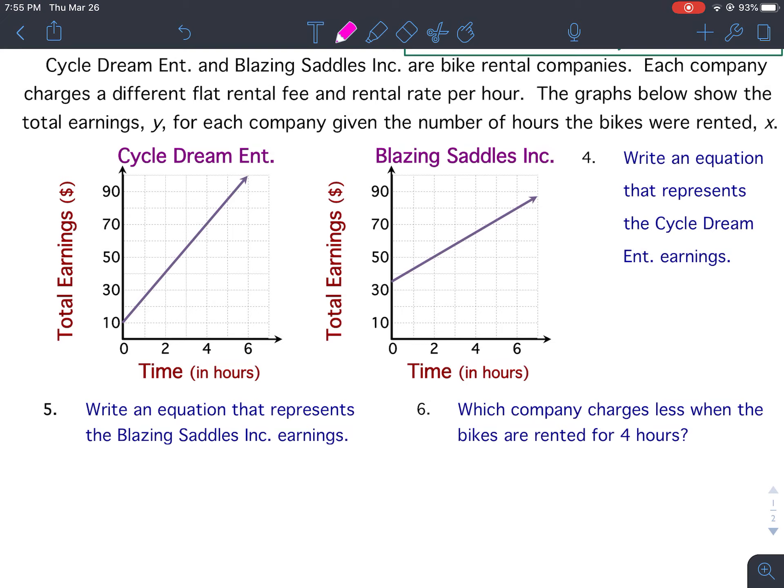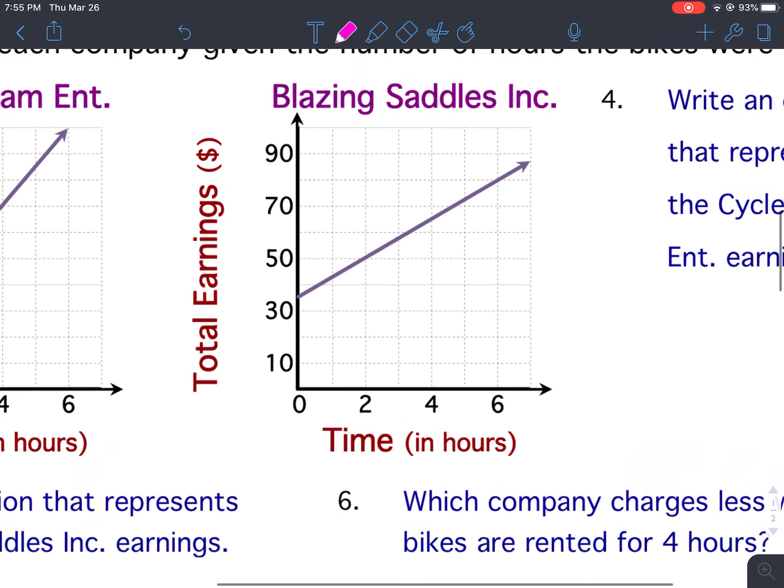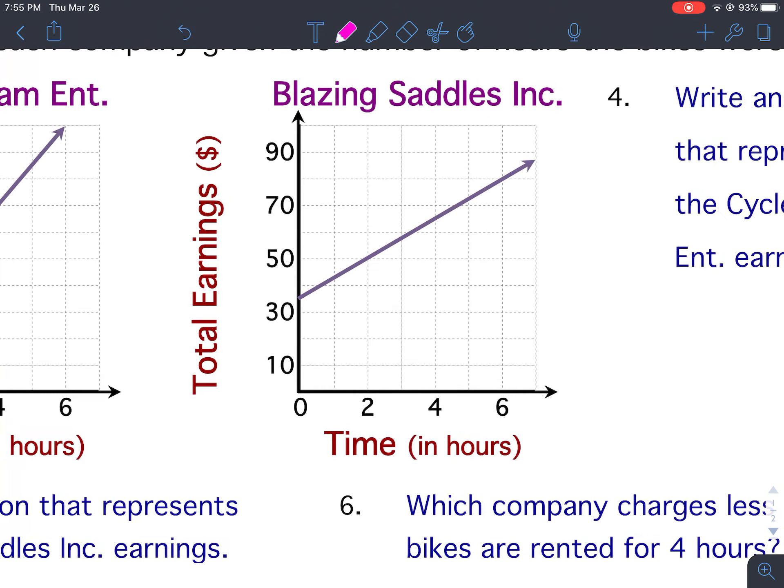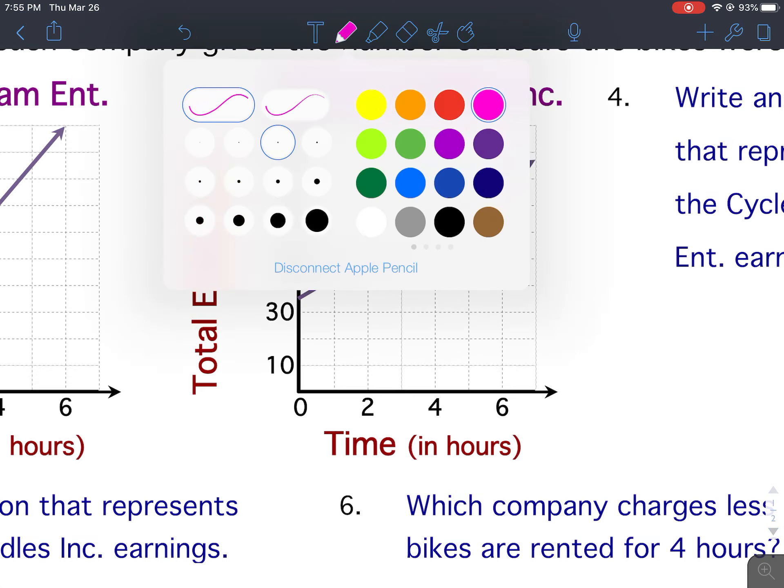So we are going to find and write an equation for number five, which is for Blazing Saddles Incorporated. So let's look at the graph. Well, finding the slope and the y-intercept in this problem is a little different than we did on the front of the bell work. On this part, we're using a graph instead of a table, which actually makes the initial value much easier to find.